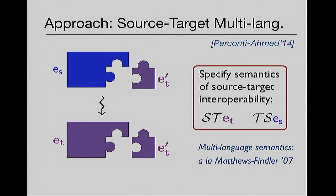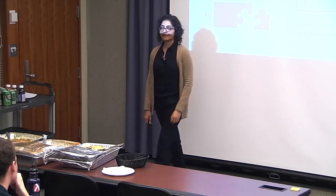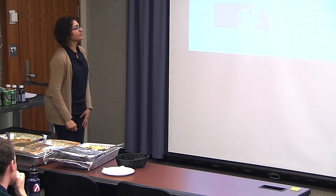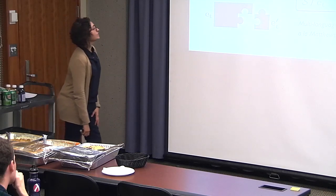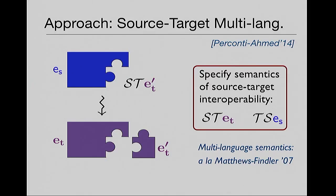The ST boundary lets you take target components and put them into a source context. The TS boundary allows you to take source components and surround them with target code. There are established principles for how you define multi-language semantics like this — they date back to a paper by Jacob Matthews and Robbie Findler from POPL '07. The benefit is that once you've done all this work of specifying how source and target interoperate, you just take your target component that someone gave you, wrap a boundary around it, and you have a formal semantics for how these two pieces of code will interoperate.